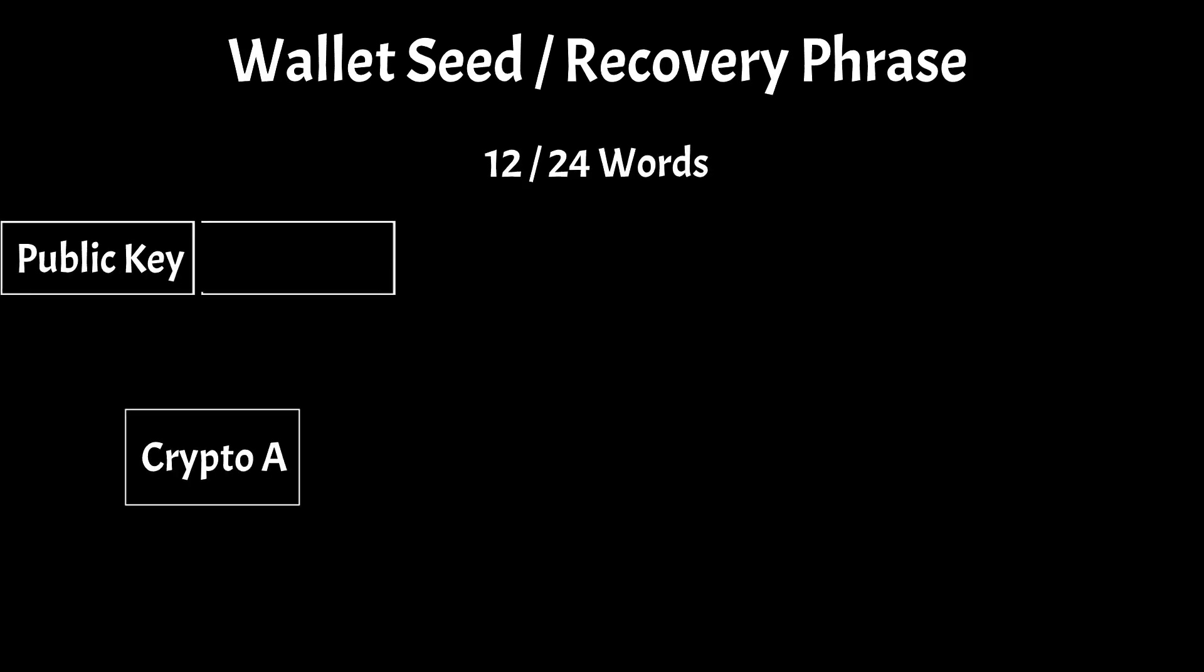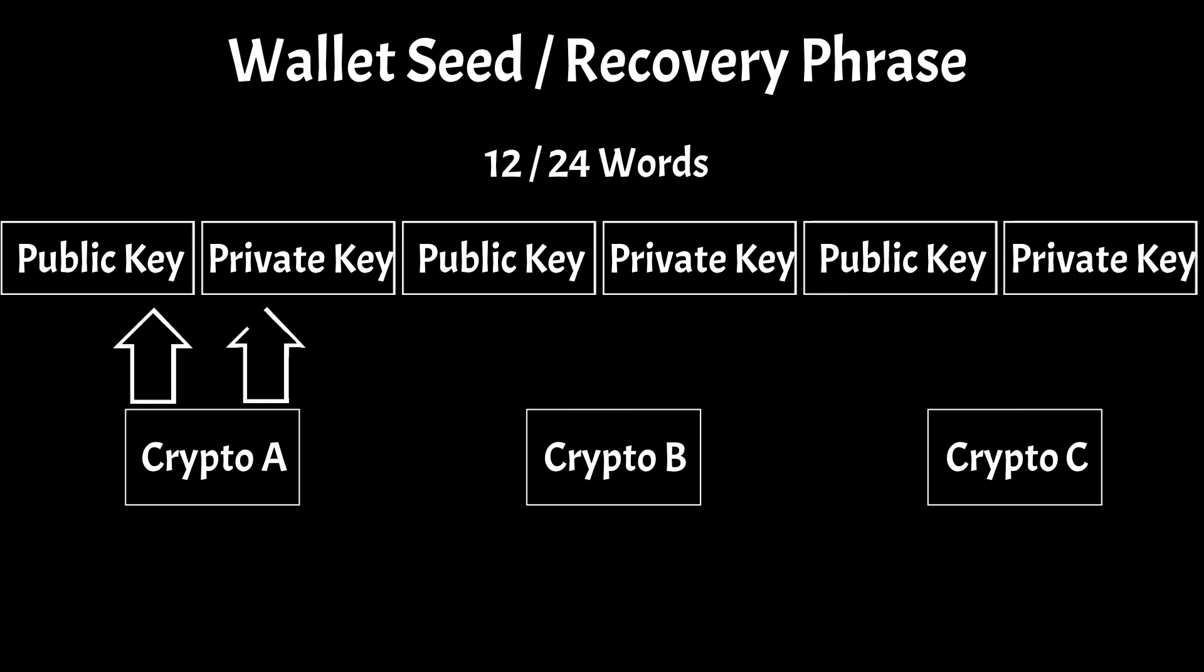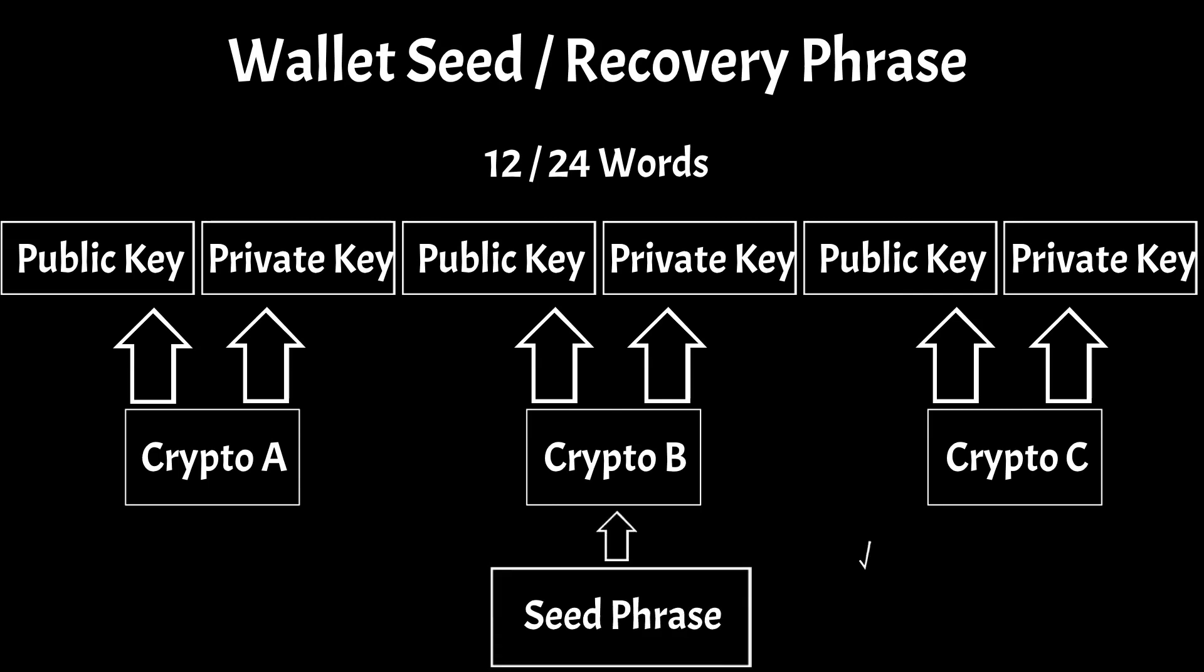Seed phrases are typically made up of 12 or 24 words and are used by single and multi-wallet apps and hardware wallets like Ledger Nano. Instead of storing multiple keys for every crypto, you only need to store one seed phrase safely.